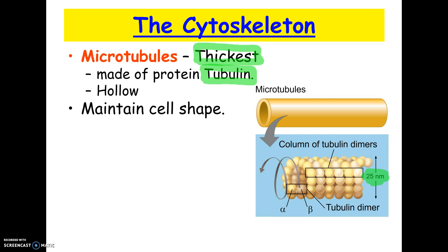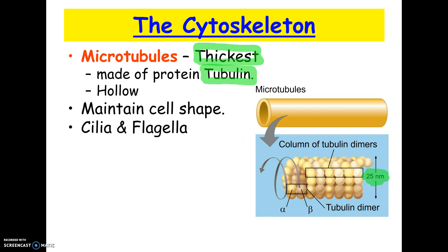Microtubules are the ones that sort of hold the cell's shape. In plant cells you also have a cell wall, but if you think about animal cells like the cheek cells we looked at, what's giving them a shape? Why aren't they just sort of all flimsy? The answer is the microtubules — they're holding the cell shape.